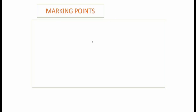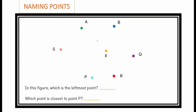Marking points. We can mark a point on the same plane or surface. Let us take a paper as a plane and mark some points. You have to name these points only with capital letters. I have named the points, and these points are read as point A, point B, point S, point X, point Q, point P, point R.